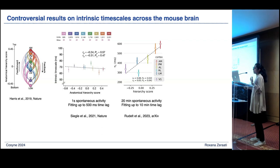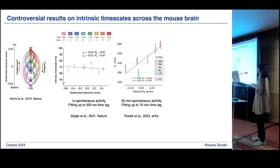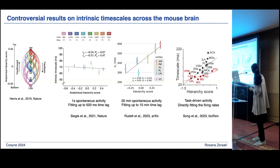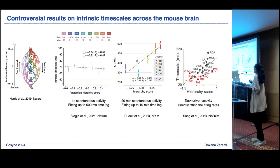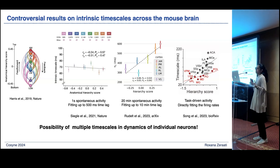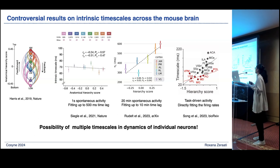However, a more recent study re-analyzed data from the same experiments but a different epoch, and could actually recover the hierarchical organization of timescales in the mouse brain. This was followed by another paper that used a different method for measuring timescales from task-driven activity and also showed a correlation between timescales and hierarchical score within the cortex. These studies show different ranges of timescales, suggesting individual neurons may operate across multiple timescales, and each study is picking up part of the bigger picture.